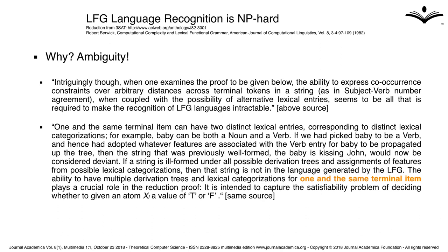One and the same terminal item can have two distinct lexical entries corresponding to distinct lexical categorizations. For example, 'baby' can be both a noun and a verb. If we had picked 'baby' to be a verb, the string 'the baby is kissing John' would be considered deviant. If a string is ill-formed under all possible derivation trees and assignments of features from possible lexical categorizations, then that string is not in the language generated by the LFG. The ability to have multiple derivation trees and lexical categorizations for one and the same terminal item plays a crucial role in the reduction proof — it captures the satisfiability problem of deciding whether to give an atom Xi a value of true or false.